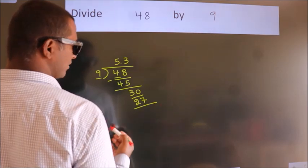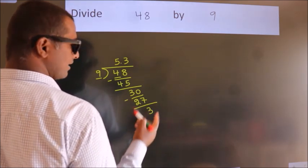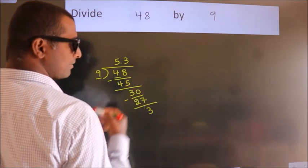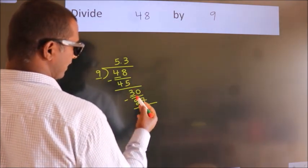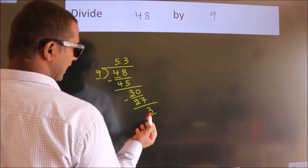Now, we subtract. We get 3. Now, you observe. We had 3 here. And we got 3 again.